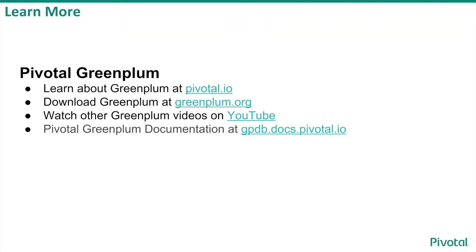To learn more about Pivotal Greenplum, visit any one of these sites. For specific information on available table types, compression options, and how to use table types and compression options with partition tables, visit the Pivotal Greenplum documentation at gpdb.docs.pivotal.io.